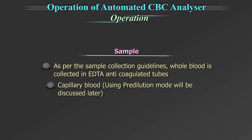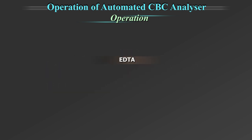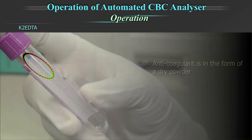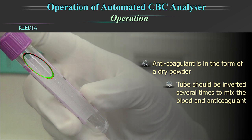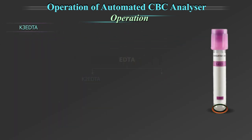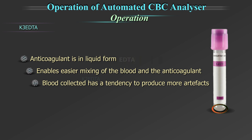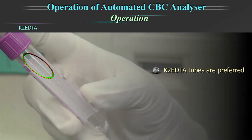As per sample collection guidelines, whole blood is collected in EDTA anticoagulated tubes. EDTA tubes can be of two types: K2 EDTA and K3 EDTA. In K2 EDTA tubes, the anticoagulant is in the form of a dry powder; after collection, the tube must be inverted several times to mix the blood and anticoagulant properly. In K3 EDTA tubes, the anticoagulant is in liquid form, enabling easier mixing. However, blood collected in K3 EDTA tubes tends to produce more artifacts, especially in the mean corpuscular volume. Hence, K2 EDTA tubes are preferred.